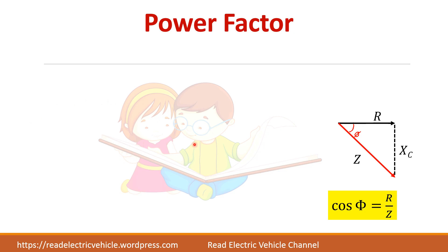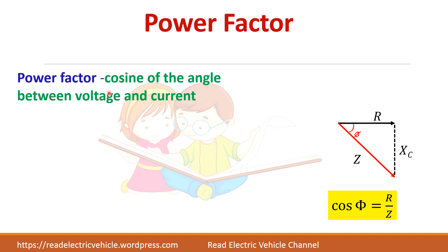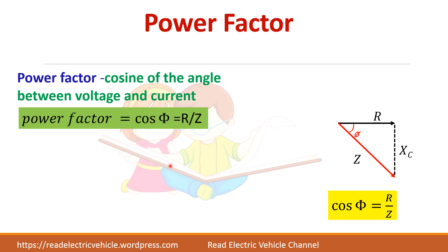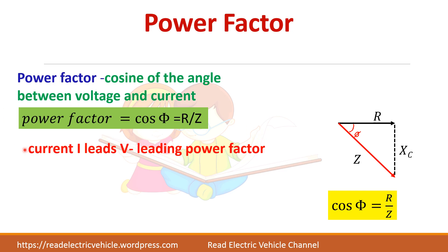Now we have to find the power factor. The power factor is given by the cosine of the angle between voltage and current. Here, cos phi equals R by Z, so power factor is R by Z, and the current leads the voltage by an angle phi. Therefore, the circuit has a leading power factor.